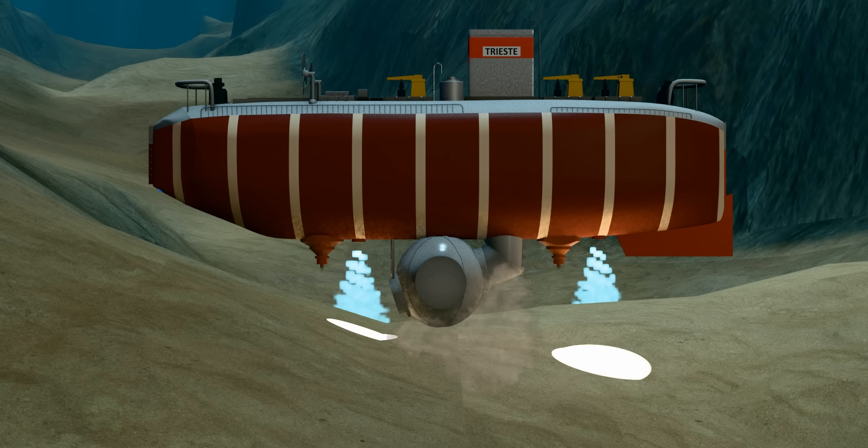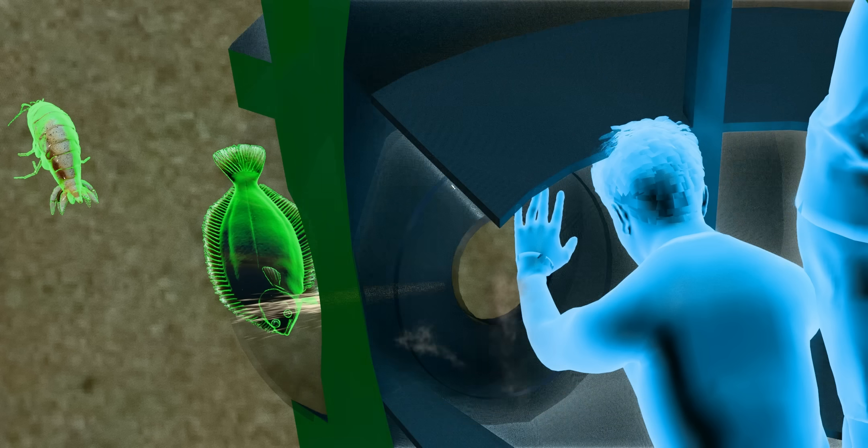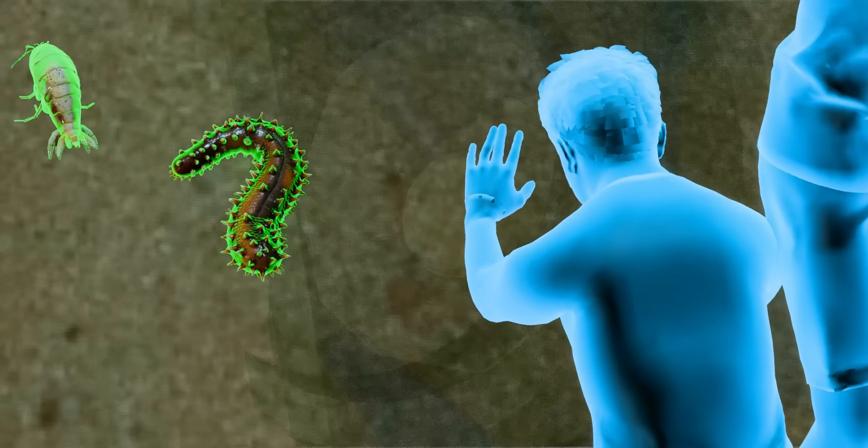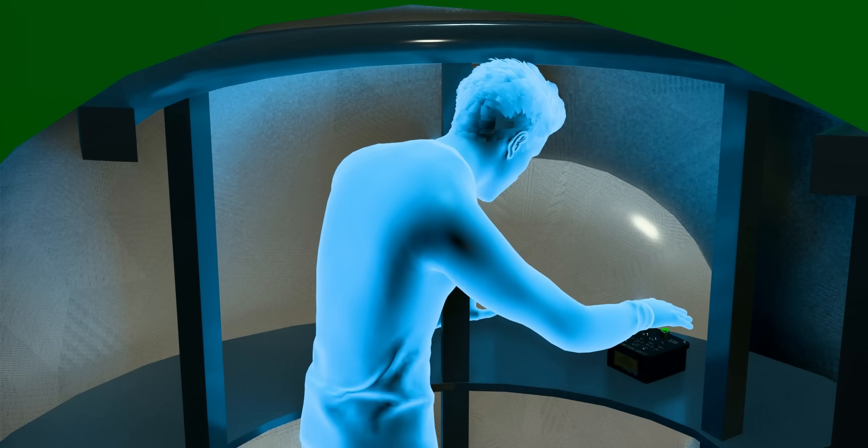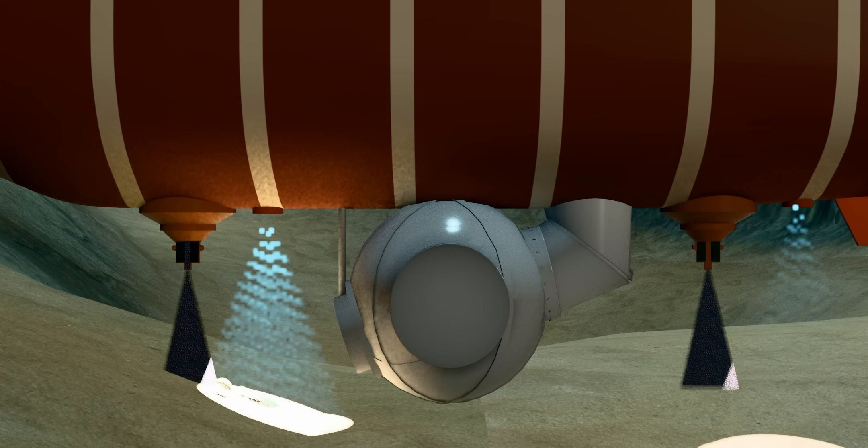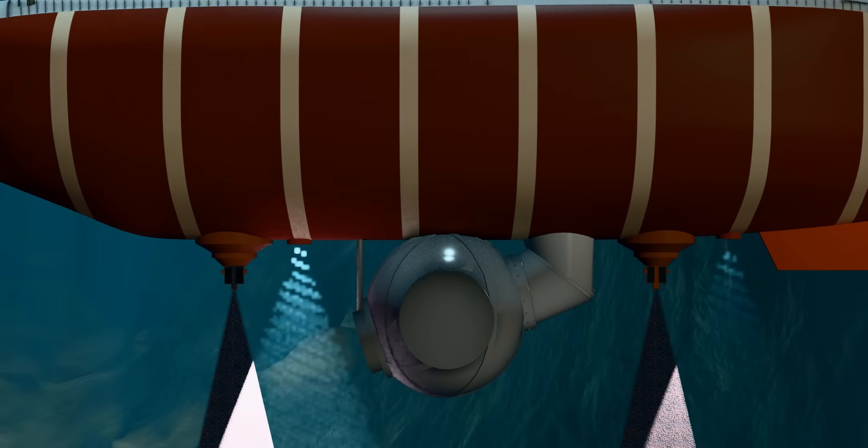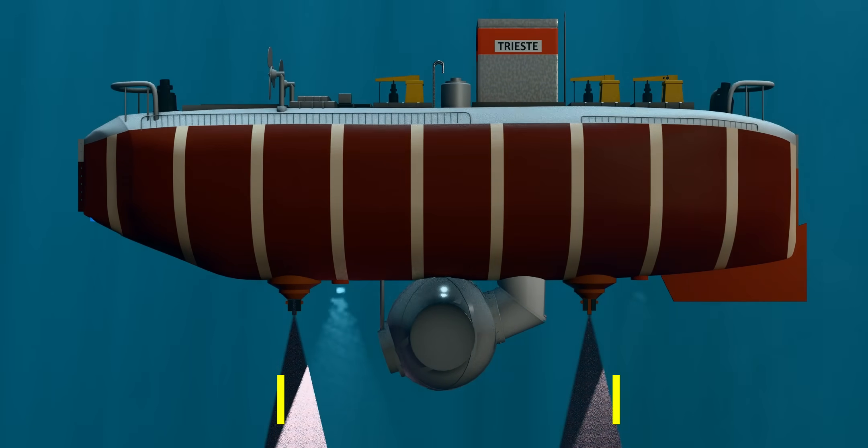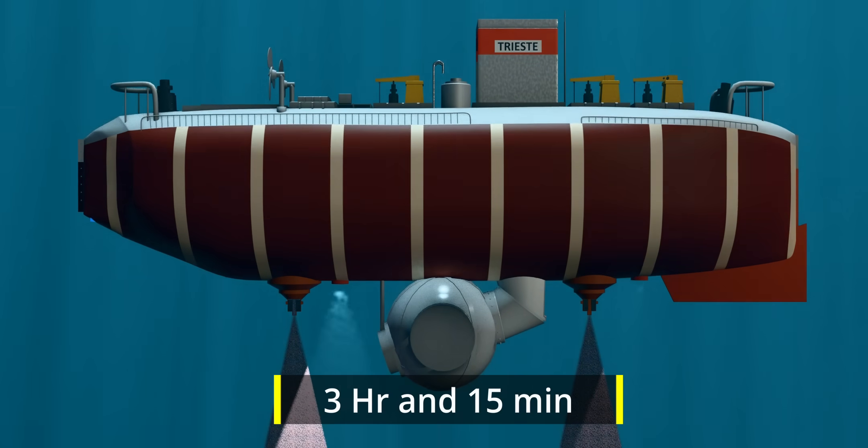The crew spent only 20 minutes on the bottom, famously observing a flatfish. Marine biologists now doubt that this could be a sea cucumber. To go up, the pilot simply flipped a switch to cut power to the electromagnets. This released the iron pellets, and the craft, now positively buoyant from its gasoline float, would begin its slow rise to the surface. The ascent took 3 hours and 15 minutes.